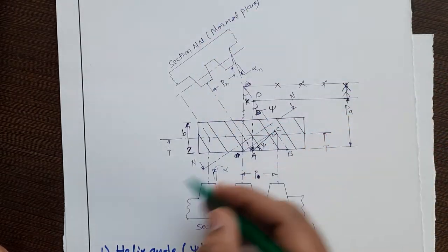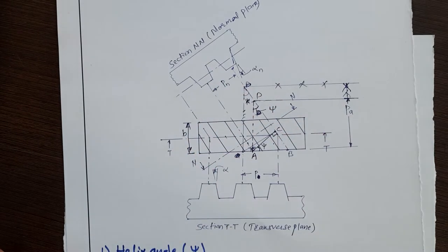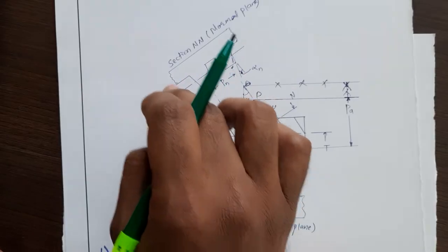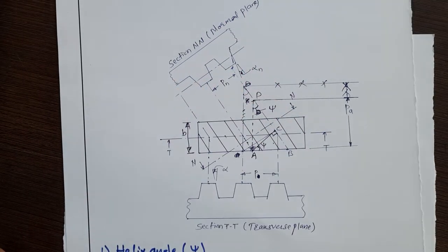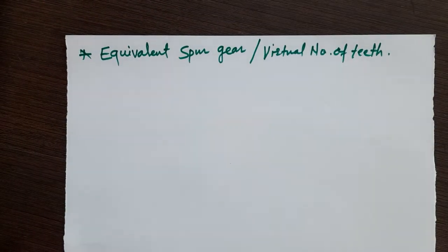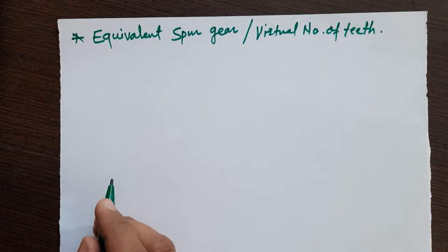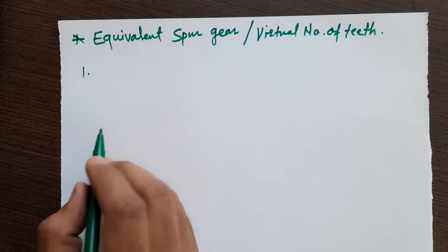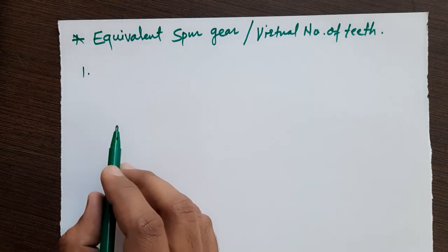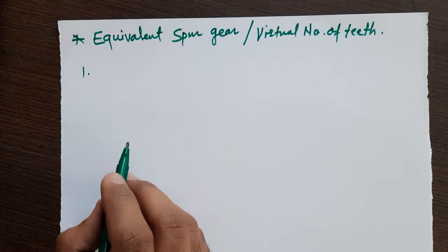In this normal plane, what we see is nothing but the virtual gear — the virtual spur gear or imaginary spur gear. Whenever you are designing a helical gear, you have to convert the helical gear into an imaginary spur gear and then proceed. So the helical gear is kinematically equivalent to an imaginary spur gear in the normal plane, which is perpendicular to the teeth.